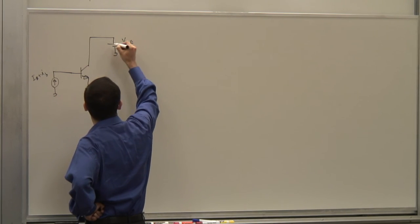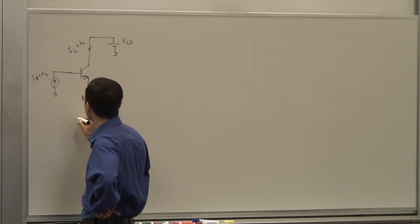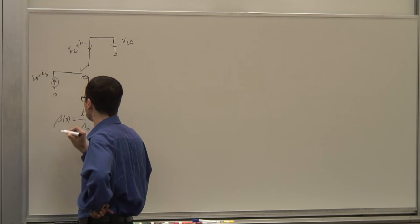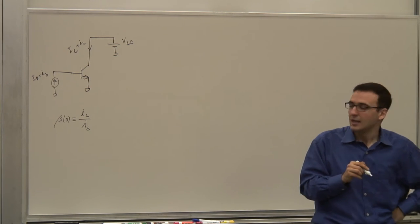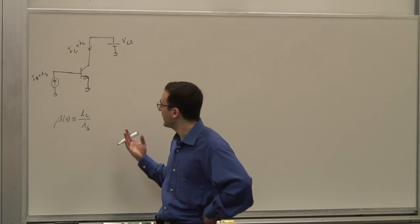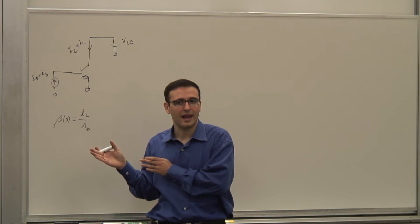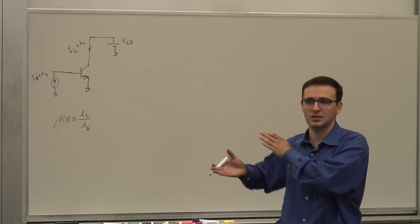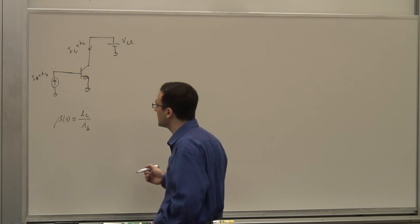I look at the collector current, which consists of a fixed current ICQ plus some ic. I'm really interested in the ratio of ic (small signal collector current) to ib (small signal base current) — I define that as my beta as a function of frequency. I want to look at this AC beta as a function of frequency in this configuration.